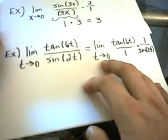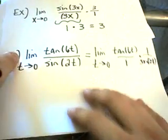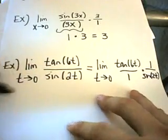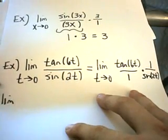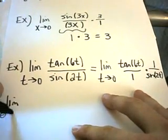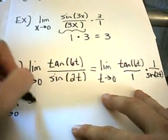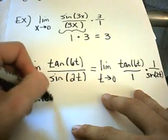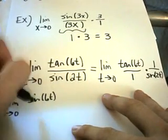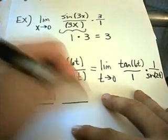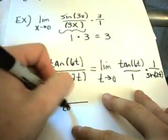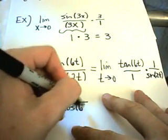Okay, and now I'm going to rewrite tangent. I can rewrite tangent of six t as sine of six t. And this is divided by cosine of six t. I'm going to put the cosine of six t over here.